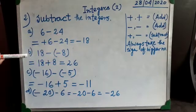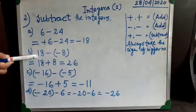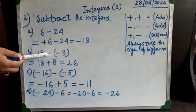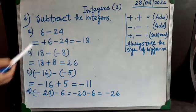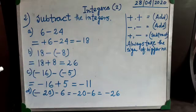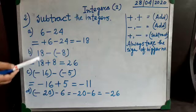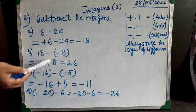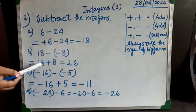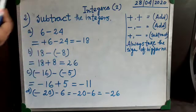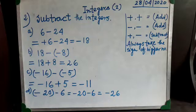The next example: 18 minus (minus 8). We open the bracket, giving us 18 minus minus, which becomes plus 8. So we have 18 plus 8 — both numbers now have the same sign, so we add them. The answer is 26. You can also write it as plus 26.